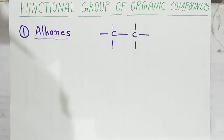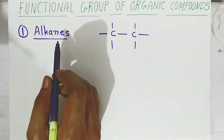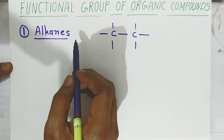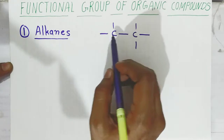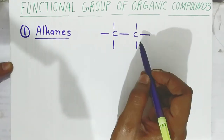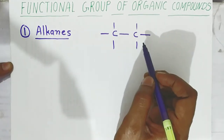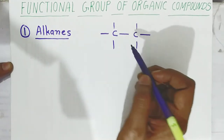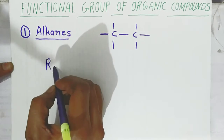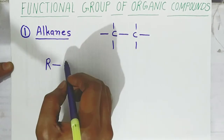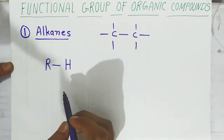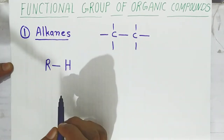The first functional group we will see is called alkane. In alkane, between carbon and carbon there is a single bond. This is shown with an alkyl group attached by hydrogen. This is called as alkane.